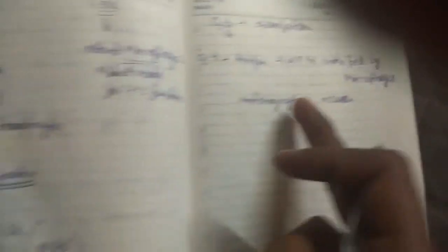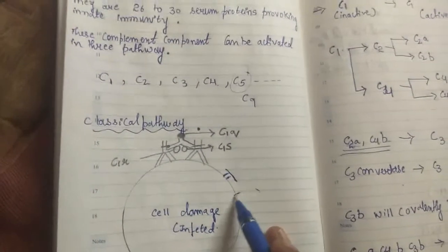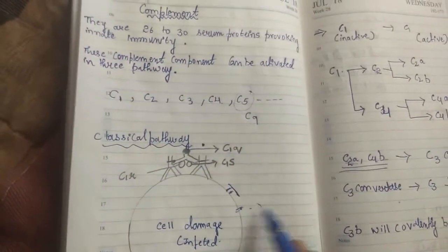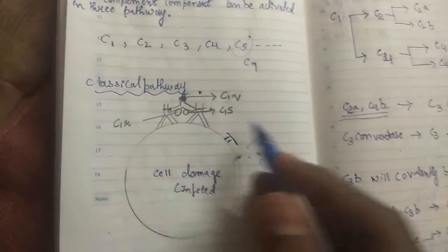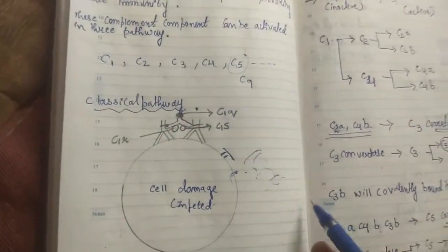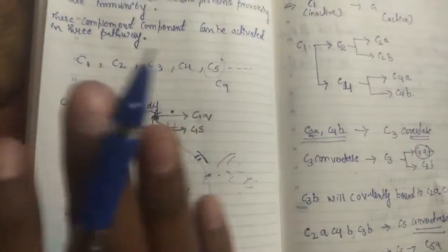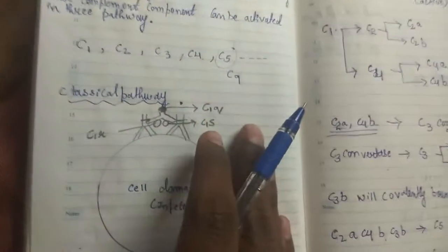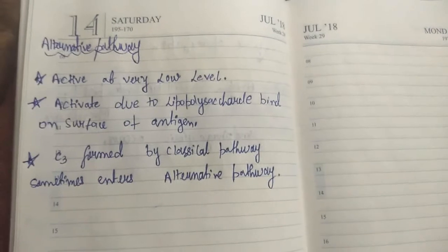This is almost the end of the classical pathway. After C5b is produced, it covalently binds and then C6, C7, C8 come and bind, followed by many C9 molecules, forming a large pore on the cell surface. This pore allows ions and other molecules to enter the cell, ultimately causing lysis of the cell. This is the classical pathway, which is dependent on antigen-antibody complexes.